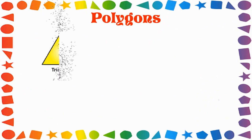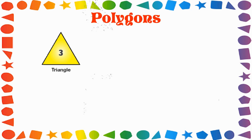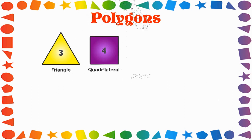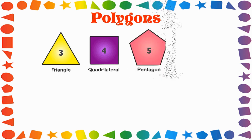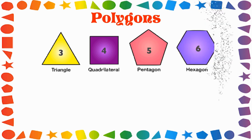A three-sided polygon is called a triangle. A four-sided polygon is a quadrilateral. The five-sided polygon is a pentagon. The six-sided polygon is called a hexagon.